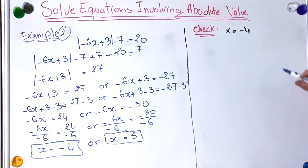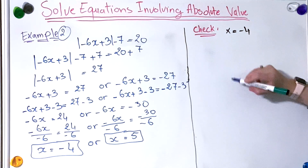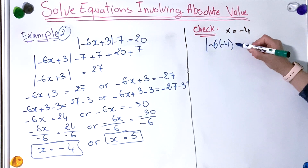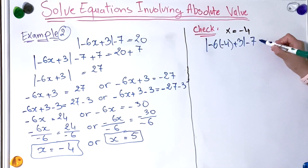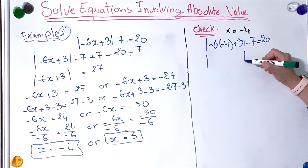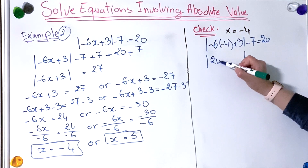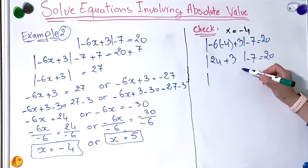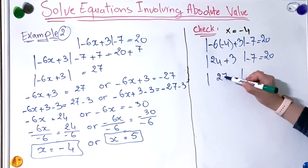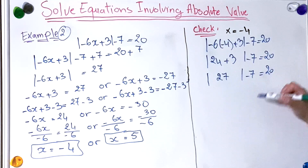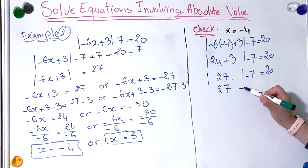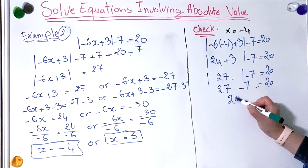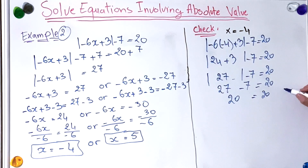Now let's check our solution. Starting with x equal to minus 4: the absolute value of minus 6 times minus 4, plus 3, minus 7, equal to 20. The absolute value of 24 plus 3 is 27, minus 7, equals 20. And the absolute value of 27 is 27, minus 7, equals 20. And 27 minus 7 equals 20, which is true.